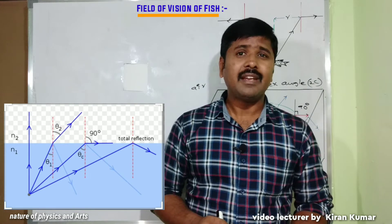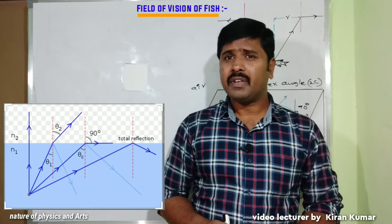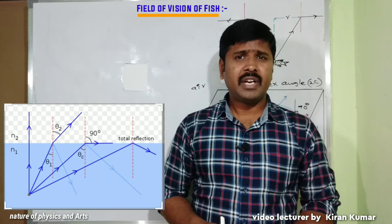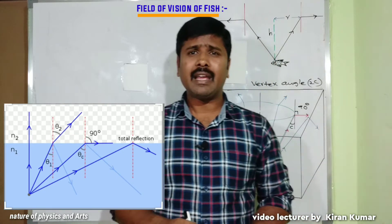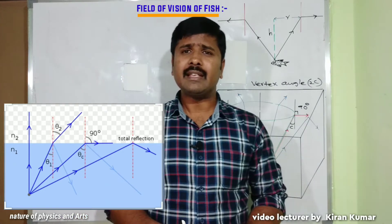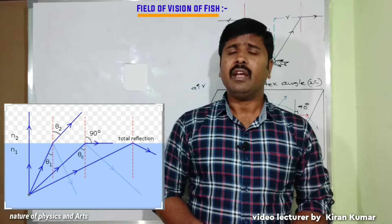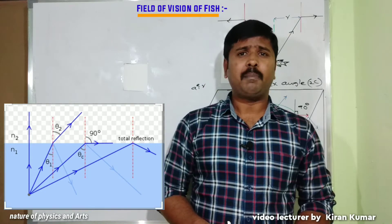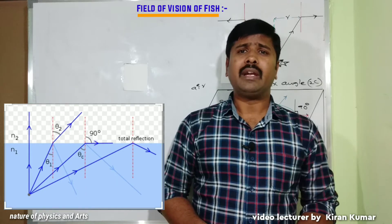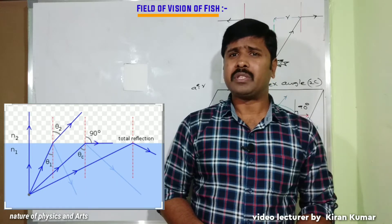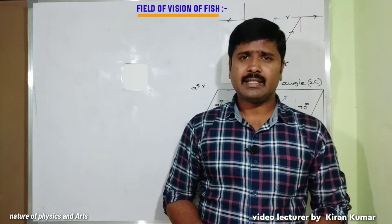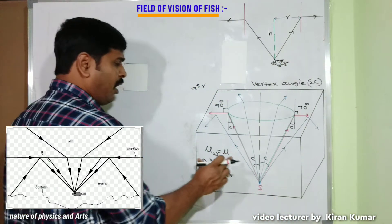When the angle of incidence increases, the angle of refraction also increases. At a particular angle of incidence, the angle of refraction is 90 degrees — that angle of incidence is called the critical angle. When the angle of incidence is greater than the critical angle, the ray is reflected back into the same medium; this phenomenon is called total internal reflection.